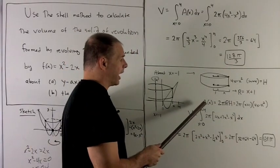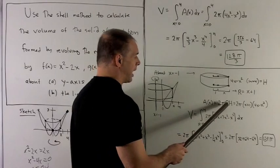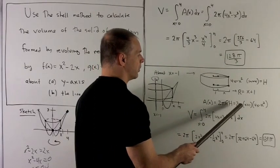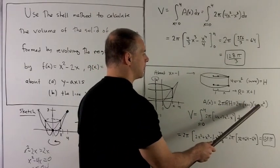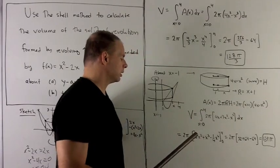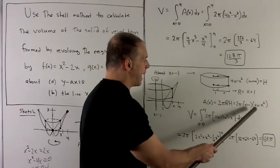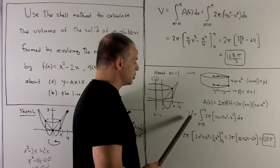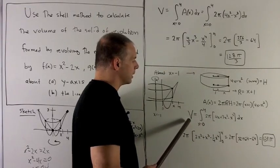I now have enough to get a new area function, 2π radius times height. So we have 2π(x + 1)(4x - x²). I expand that, put it in my integral, and now I can just chug away with my volume formula.